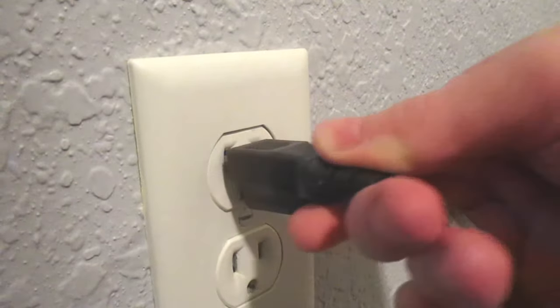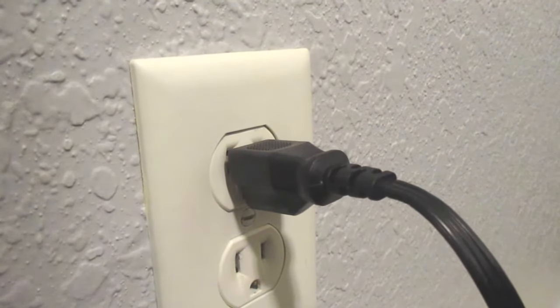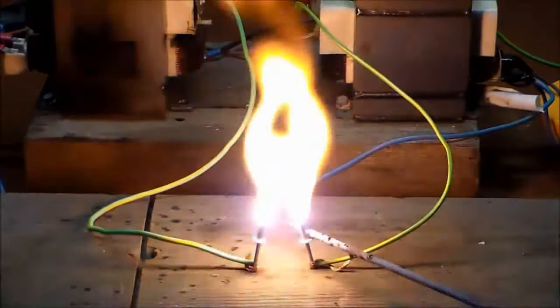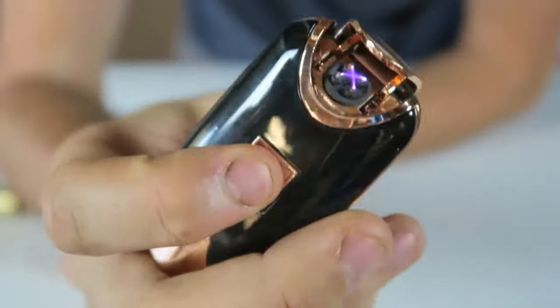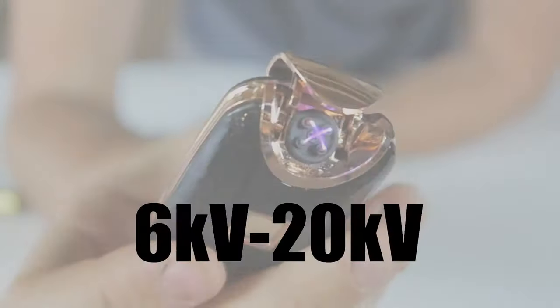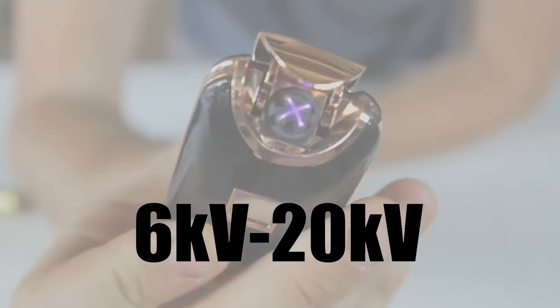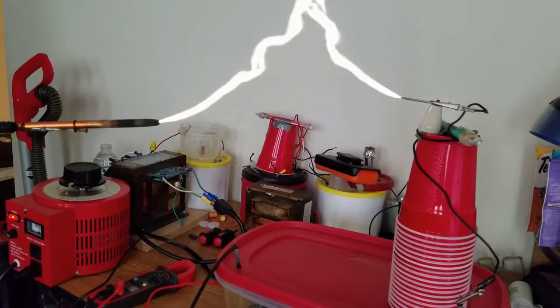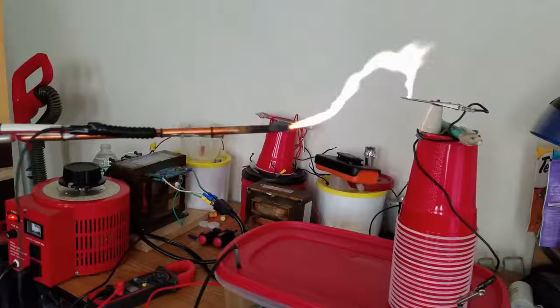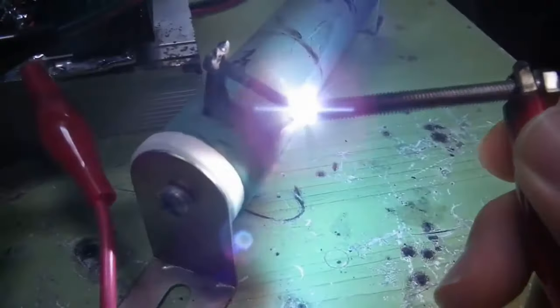To start, you're going to want something to power your Tesla coil off of, and for that an ordinary 60Hz transformer is usually used, although basically anything over 4000 volts will work. The optimal voltage range is between 6000 volts and 20,000 volts. Anything higher than that is usually not worth it, and anything lower than that will have trouble firing the spark gap.